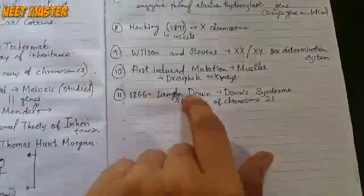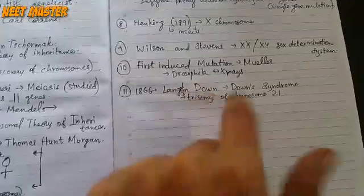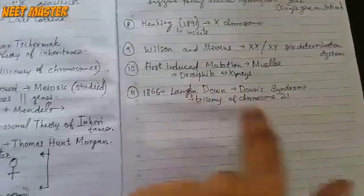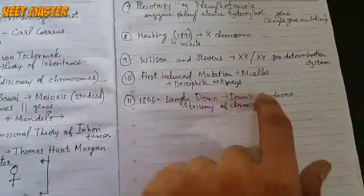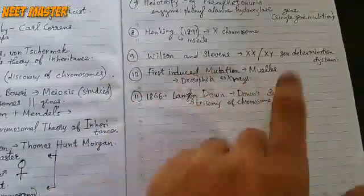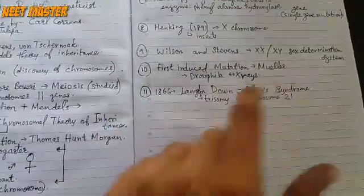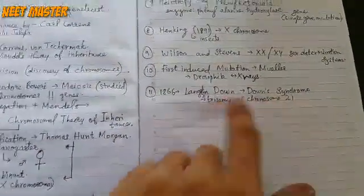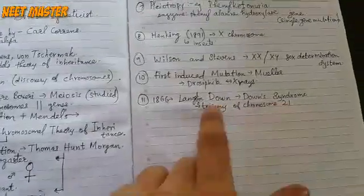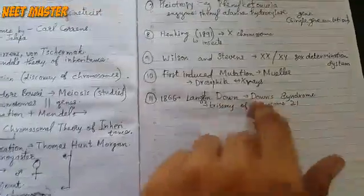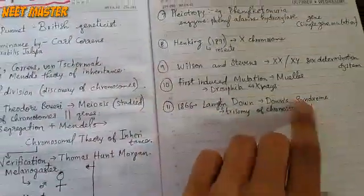In Langdon Down, we call it Down syndrome. Down syndrome is trisomy of chromosome 21. It contains 47 chromosomes total. This is Down syndrome.